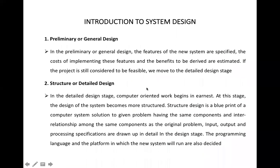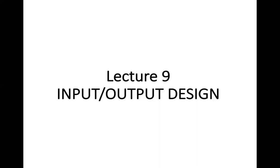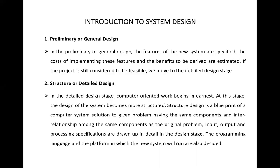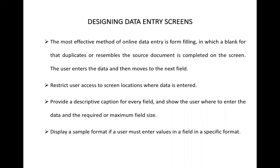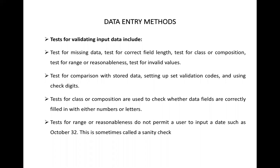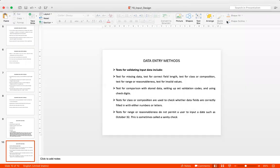That concludes today's session. Today we discussed what system design is and why it is necessary. We established that system design is of two types: preliminary or general design, in which we identify only components and features; and structured and detailed design, in which components are connected, relationships between them are defined, data flow is specified, input/output and processing specifications are decided, and programming language and platform choices are made. After that we talked about input design and its main objectives, how to design a good data entry screen, the various data entry methods, and the importance of validating input data. I hope everything is clear.